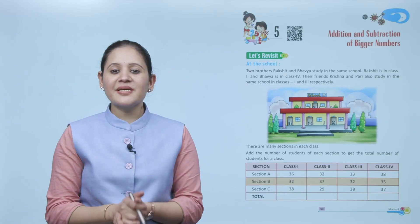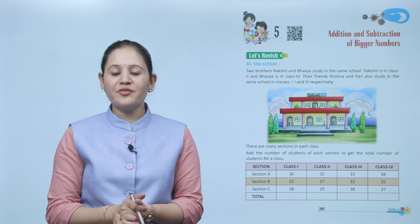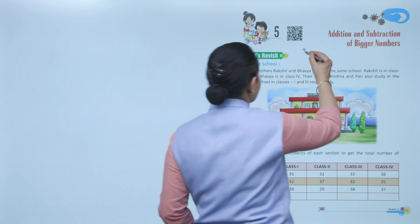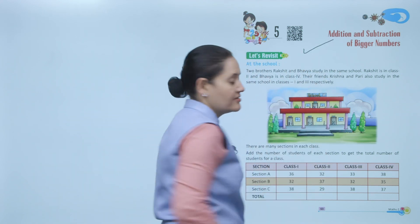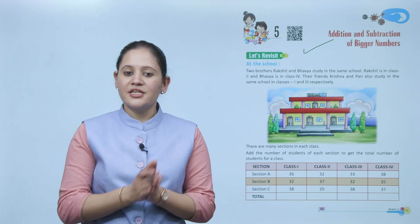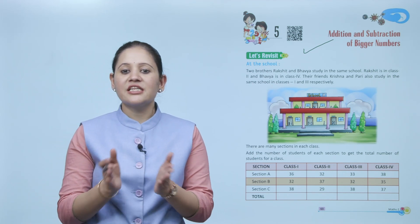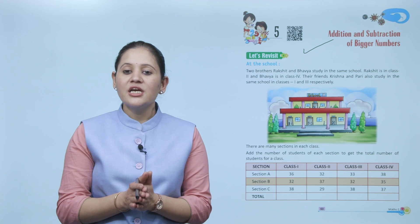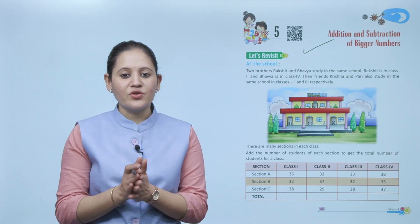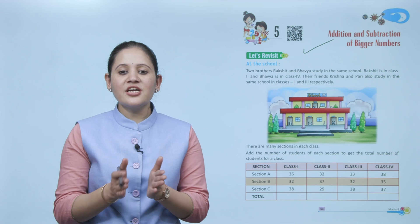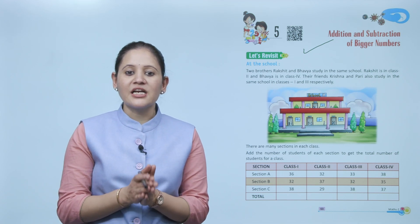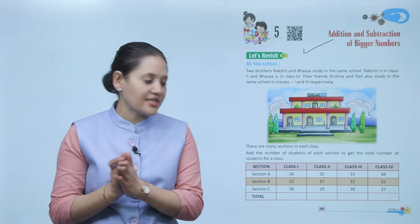Hello kids, welcome to today's maths class. Today we'll do addition and subtraction of bigger numbers. Let's revisit with a story: two siblings, Rakshita and Bhavya, study in the same school. Rakshita is in class 2 and Bhavya is in class 4. Their friends Krishna and Pari also study in the same school, in class 1 and class 3 respectively.